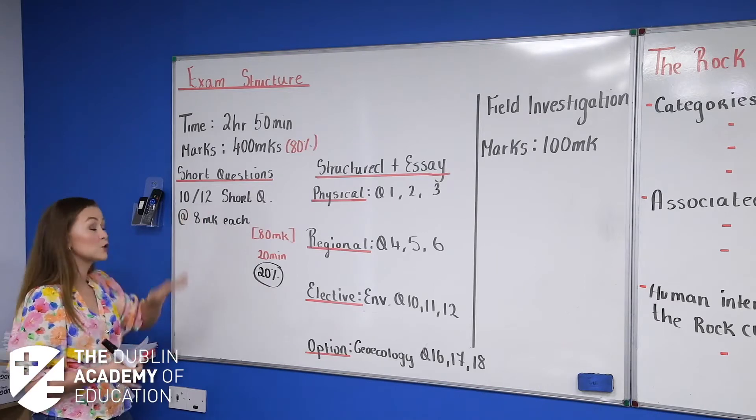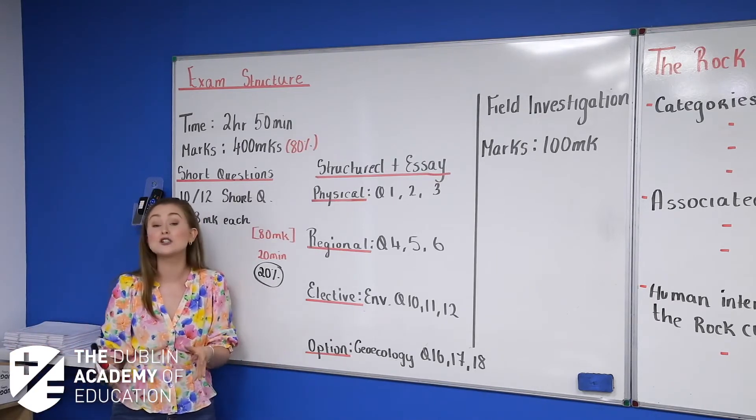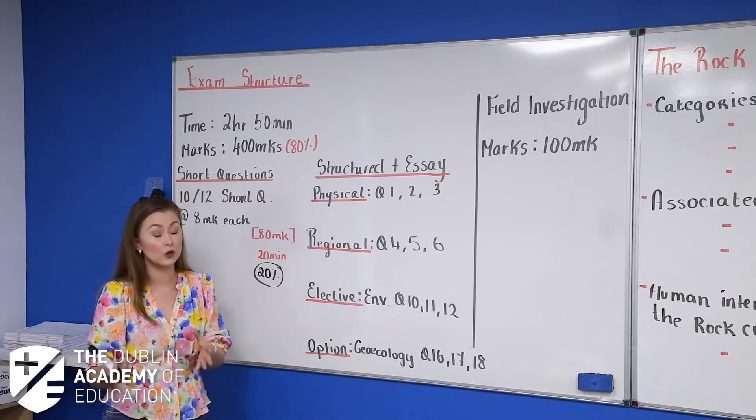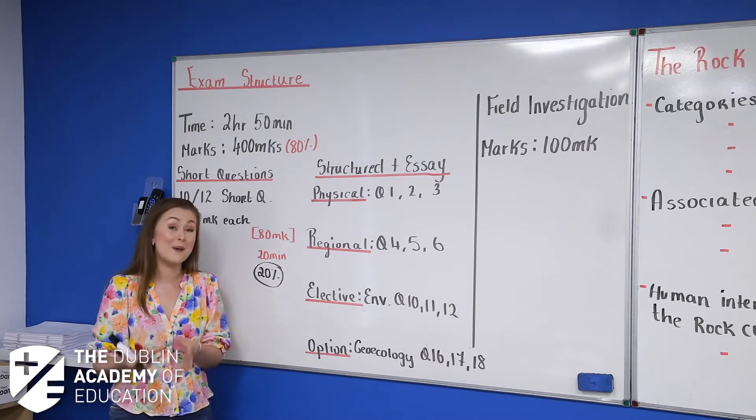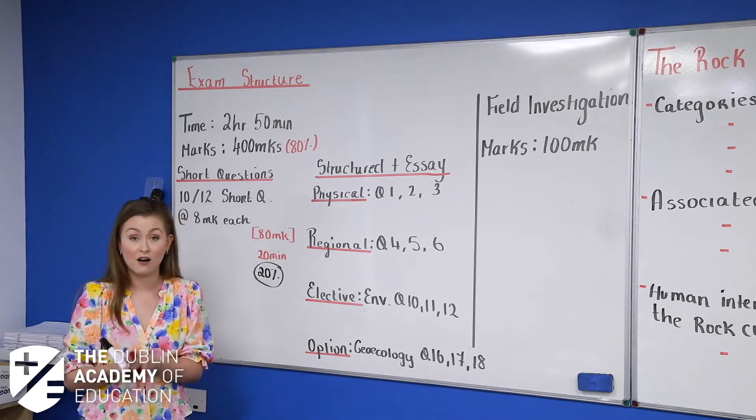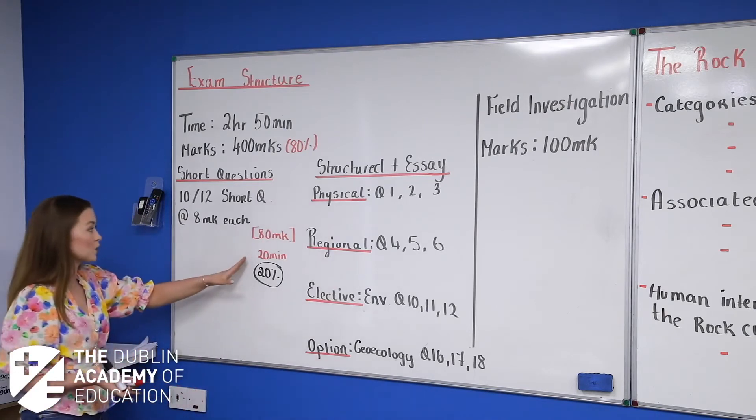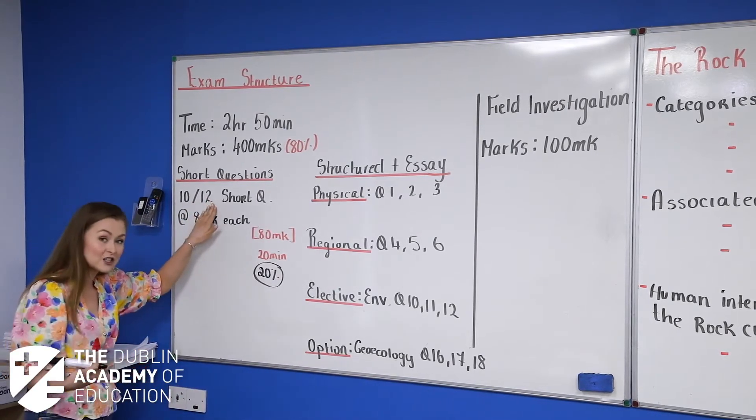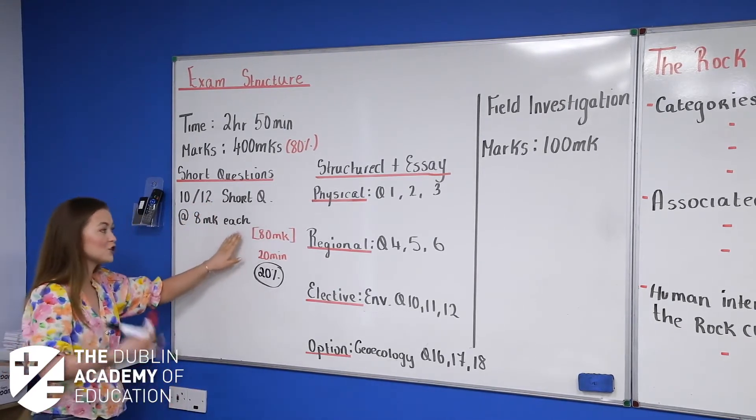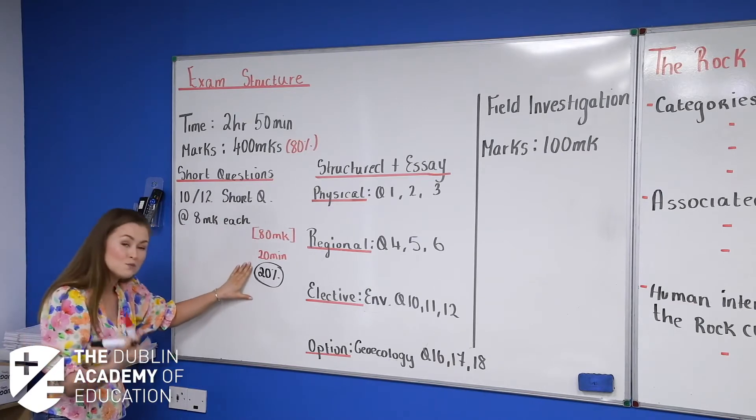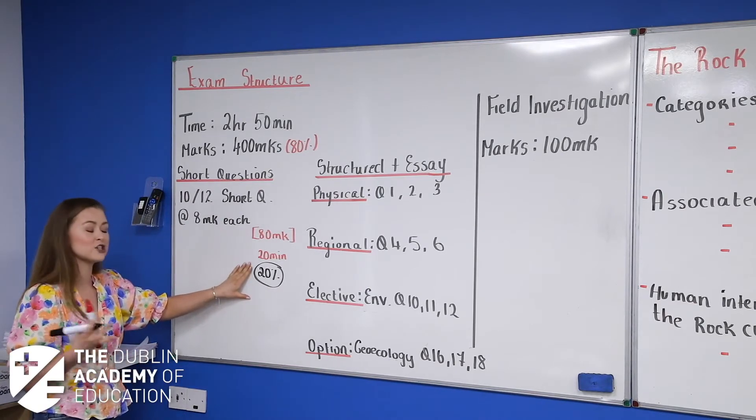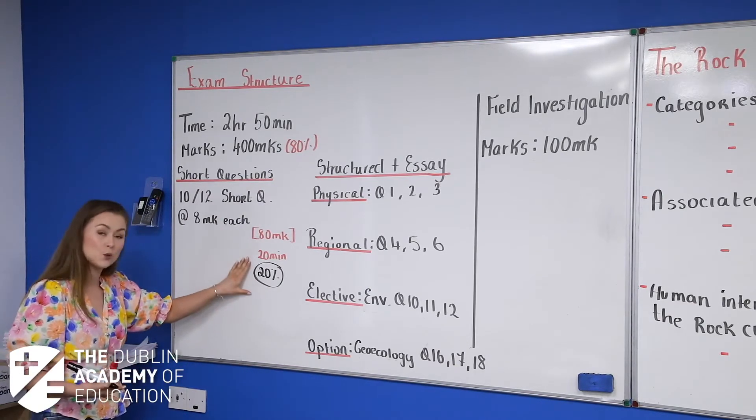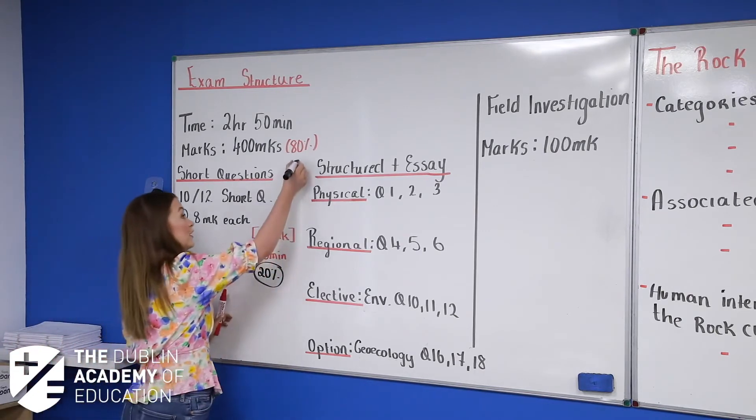20%. 10 out of 12, answer all 12, your examiner is going to take the best 10. So the 10 with which you have the highest marks from. So one more time, answer 10 out of the 12, eight marks each, 80 marks in total, maximum 20 minutes, particularly if you're someone going for that H1, and 20% of your final grade.